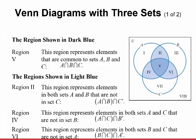Now let's look at Venn diagrams with three sets. The regions shown in dark blue are important. Region 5 — shown in dark blue — represents elements that are in common in all three sets: A, B, and C. So region 5 is where all three sets intersect — the set of elements that are in A, in B, and in C.